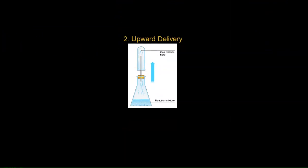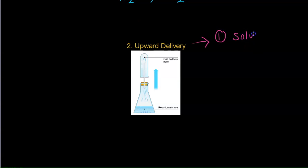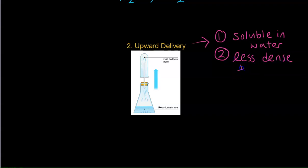Next we will talk about the upward delivery method. To collect gases using this method, the gas has to have the following properties: first, it has to be soluble in water, and secondly, it has to be less dense than air. Let's look at the reaction setup — this is where the reaction happens. The gaseous products will be produced, travel along the delivery tube, and enter the topmost chamber here.